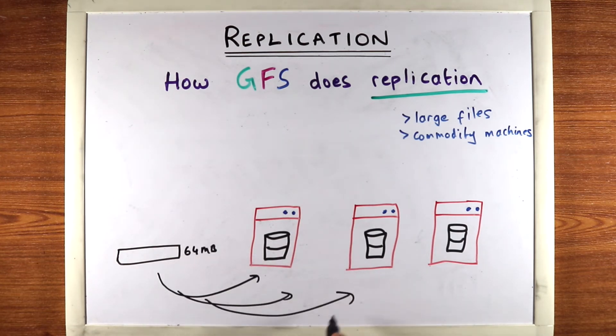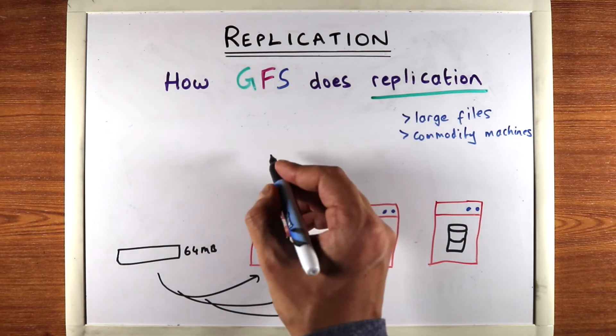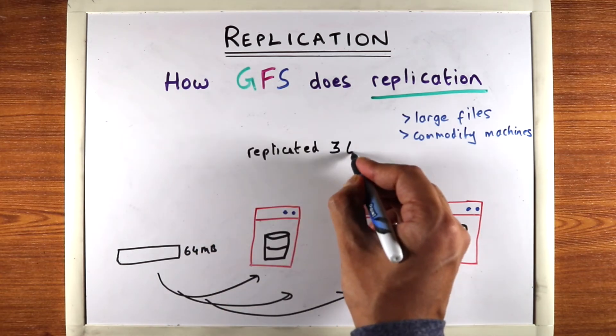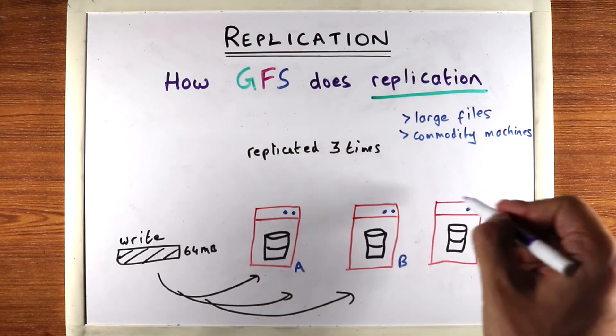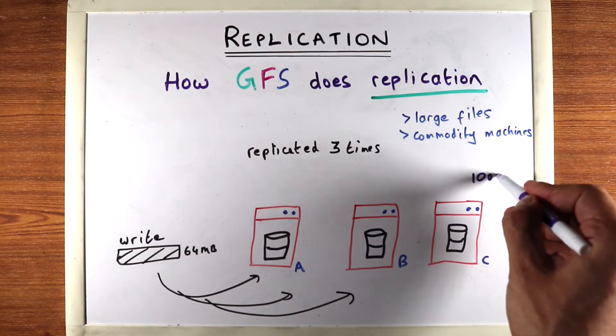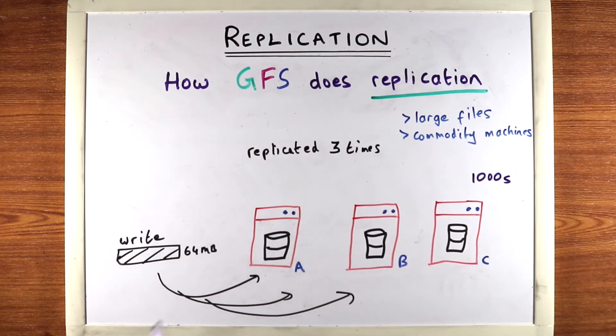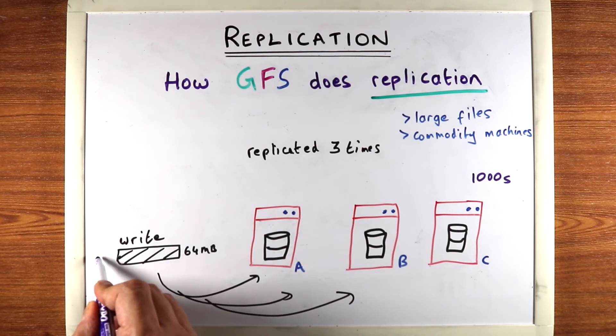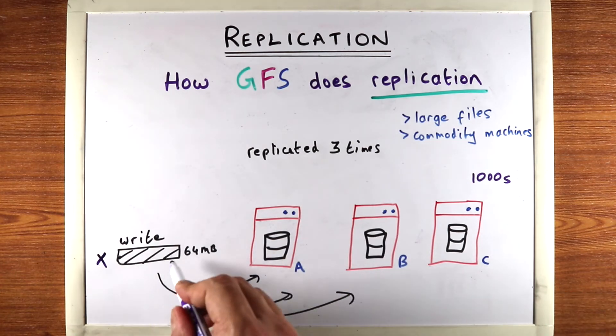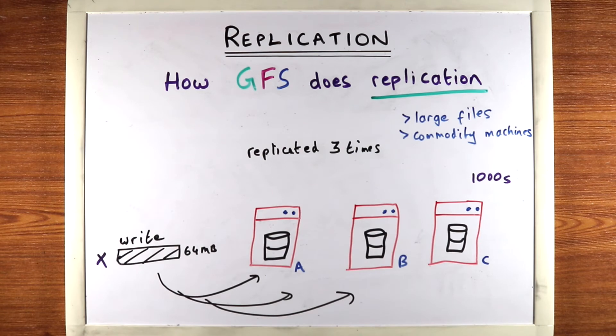Google file system typically by default has a replication factor of three, which means every block is replicated in three machines. And these three machines are one of the thousands of other machines in this cluster. Let's say that we have logic that tells you for block X, machine A, B, and C are where you write it. So let's see how this works.